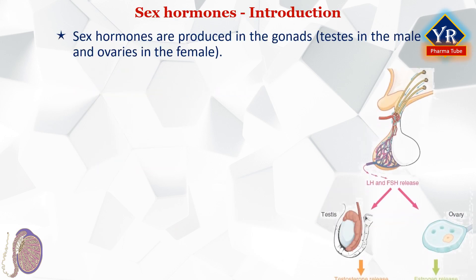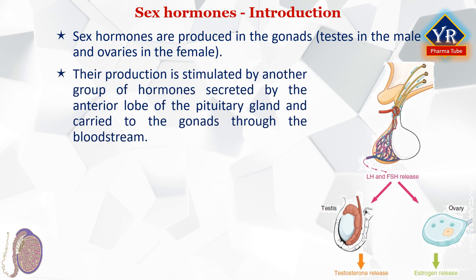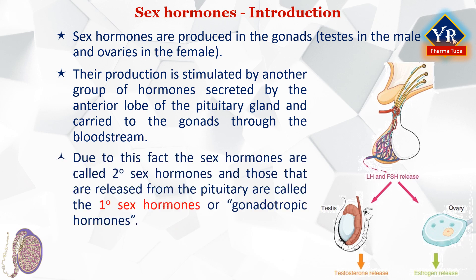Sex hormones are produced in the gonads, i.e. testis in the male and ovaries in the female. Their production is stimulated by another group of hormones secreted by the anterior lobe of the pituitary gland and carried to the gonads through the bloodstream. This has been proved experimentally by removing the anterior lobe of the pituitary gland in an animal which fails to show sexual activity, and by implantation of the gland, the animal restores the normal sexual characteristics. Due to this fact, the sex hormones are sometimes called secondary sex hormones and the hormones of the anterior lobe of the pituitary gland are called the primary sex hormones or gonadotropic hormones.